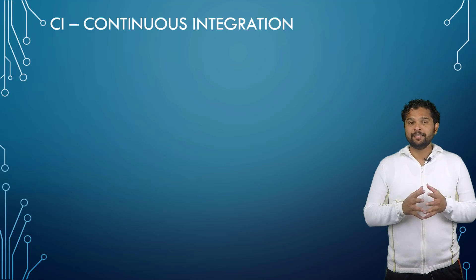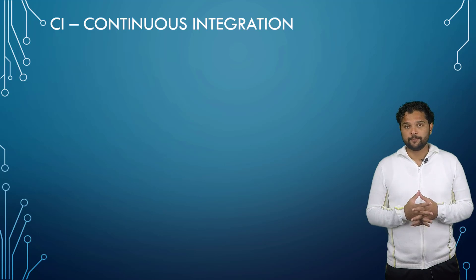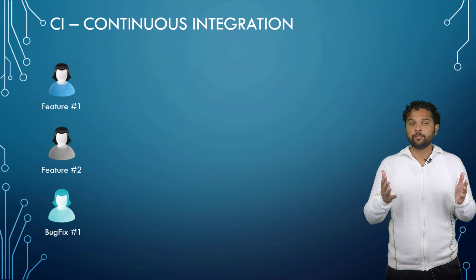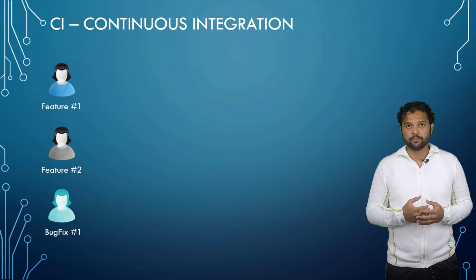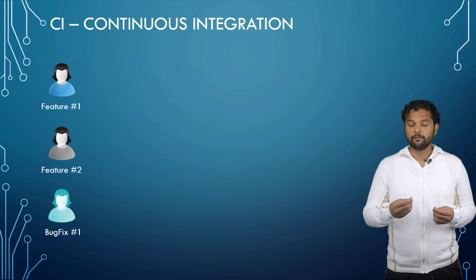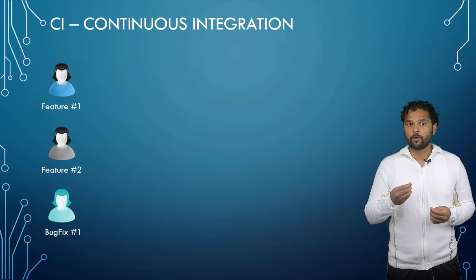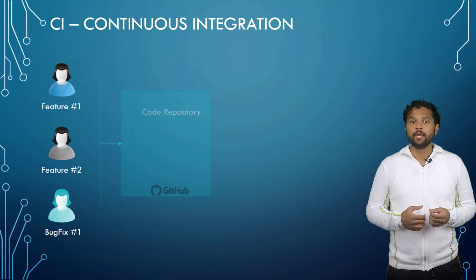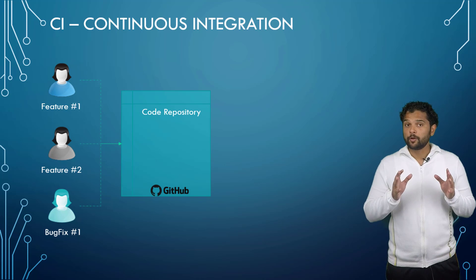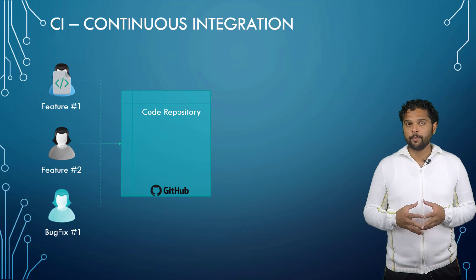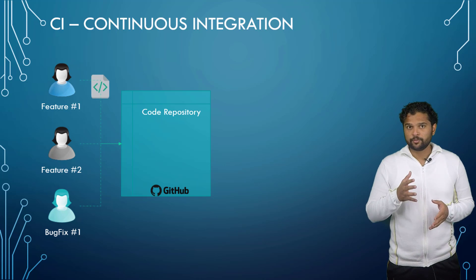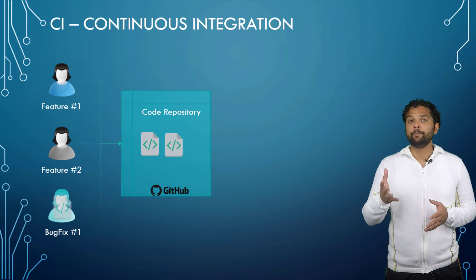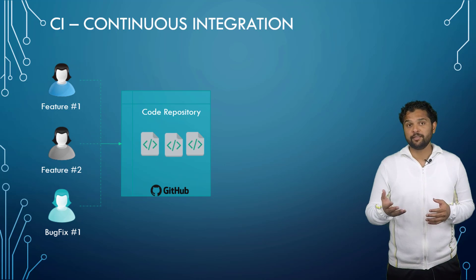The CI in CI/CD stands for Continuous Integration. Let's say we have multiple developers working on the same application. Each of them have their own feature or bug fix that they are working on, and they are all contributing to the same application by pushing their code into the same code repository. The code repository could be a version control system like GitHub. When a developer pushes code to the repository, it is linked to a build management system like Jenkins, that takes the code and builds it.